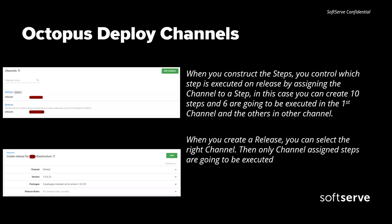Octopus Deploy has channels. This is a feature where, for example, you have 10 steps under a pipeline and you want six steps to be executed on the default channel and the other ones on the second. You set the channel when you create a release. It's categorizing — very useful because you can create a full set of steps and then just split all the steps where they should and should not be executed. You don't need to create multiple pipelines duplicating these steps, whether through UI or YAML files like in Azure DevOps.